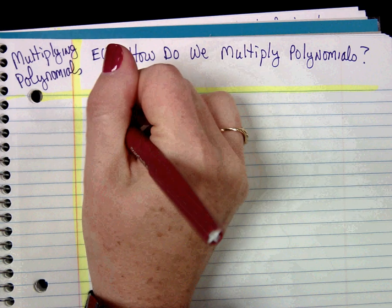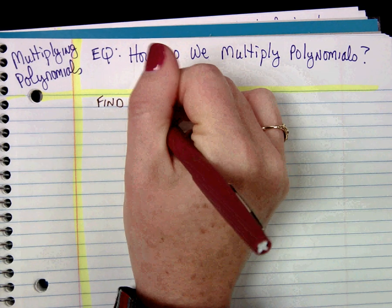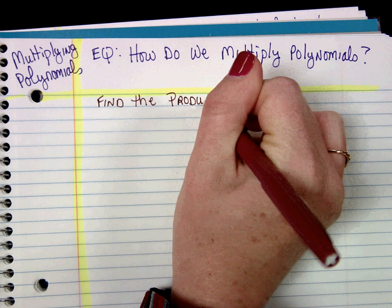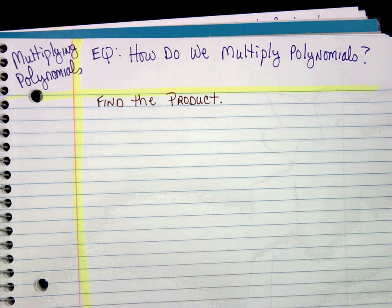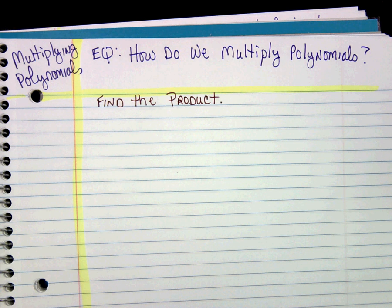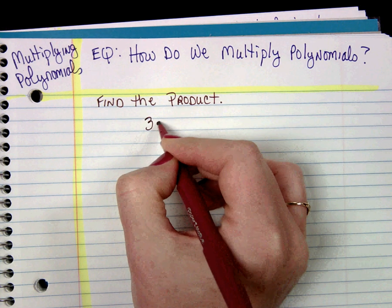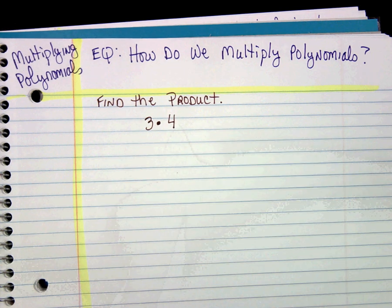When we multiply polynomials, you're going to see the direction say find the product. It's saying find the product because the product is an answer to a multiplication problem. Just looking at a very basic problem, three times four, this is something we've done in elementary school.